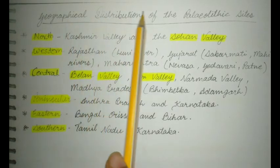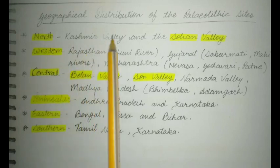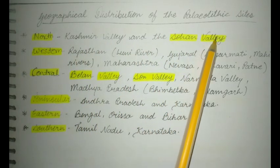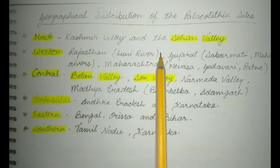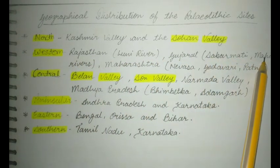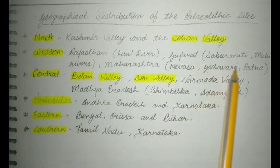Now we will talk about the geographical distribution of Paleolithic sites. North: Kashmir Valley and the Sohan Valley. Western Rajasthan: Lunar River, Gujarat, Sabarmati and Mahi Rivers. Maharashtra: Nimasa, Godavari, Patna.